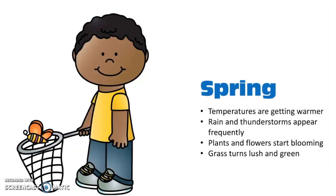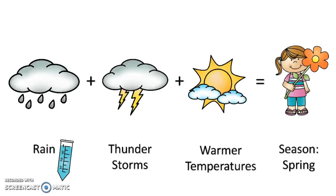In the spring, our temperatures start to get warmer. Rain and thunderstorms appear frequently, which causes our plants and our flowers to start blooming. Our grass turns lush and green as well. In the springtime, we get lots of rain, sometimes thunderstorms, warmer temperatures, and beautiful flowers.